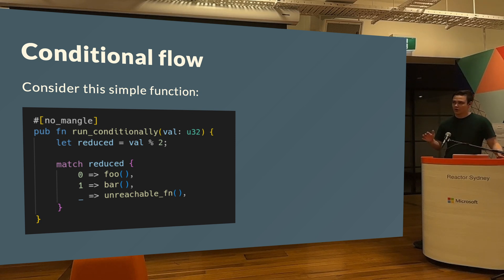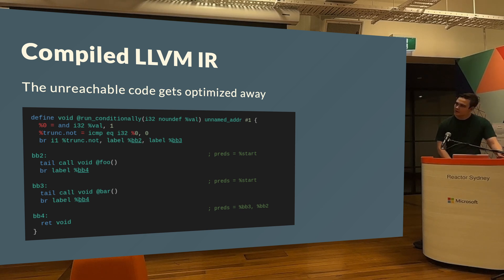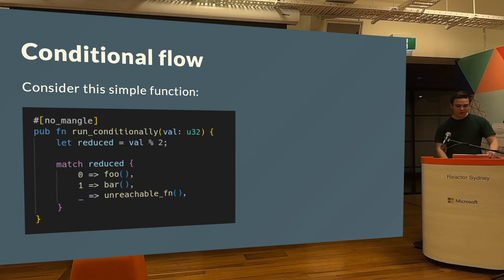It turns out the compiler also knows. The compiler knows that only 0 and 1 can be hit, and it optimizes away the unreachable branch. So you can see we only hit foo and bar — we don't hit unreachable, which is unreachable.